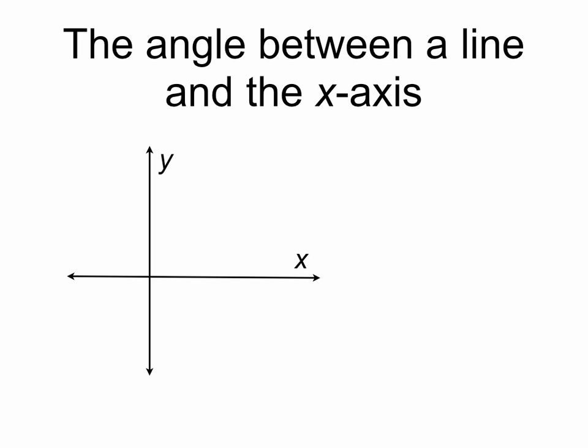So first we have our axes, and here's a line, y equals mx plus b. And now we've drawn in the angle phi, the angle between this line and the x-axis that we're trying to calculate. Well if we want to calculate phi, we're going to need a triangle and use some trigonometry.